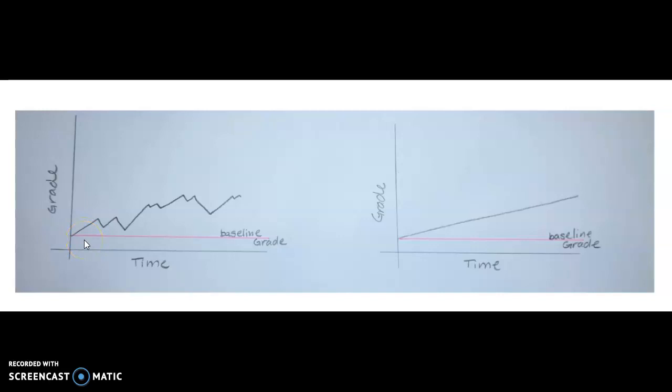That was why it was such a big deal for you to check your baseline grade. For example, if you had a 70% as your baseline grade, you could go up to an 80, then you could go down to a 75, and then you could go up to an 87, then you could go down to whatever. Your grade will go up and down based on your performance and the work that you're turning in.